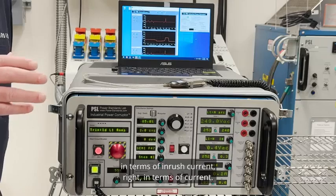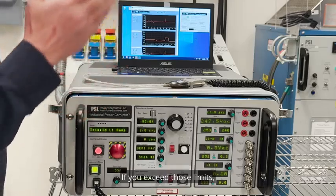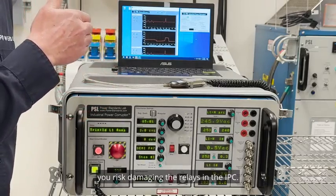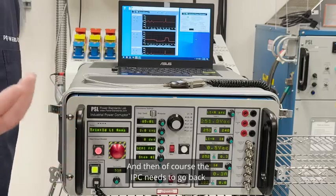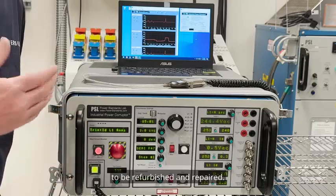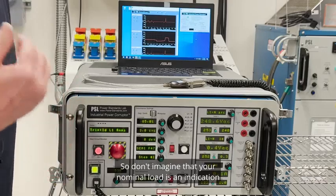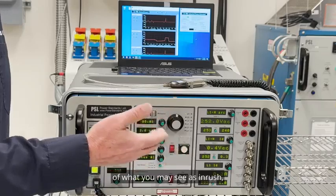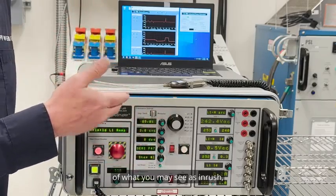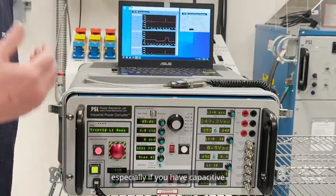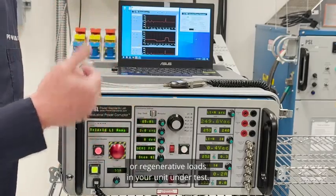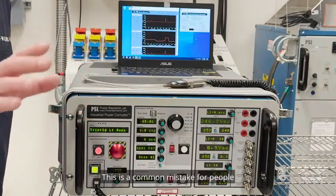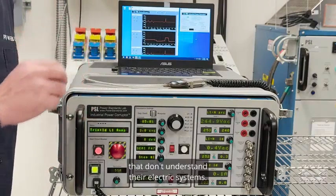If you exceed those limits you risk damaging the relays in the IPC, and then of course the IPC needs to go back to be refurbished and repaired. So don't imagine that your nominal load is an indication of what you may see as inrush, especially if you have capacitive or regenerative loads in your unit under test. So word of precaution—this is a common mistake for people that don't understand their electric systems.